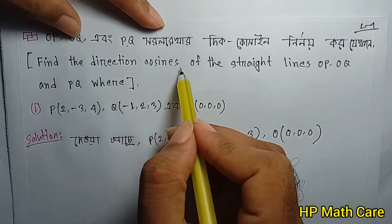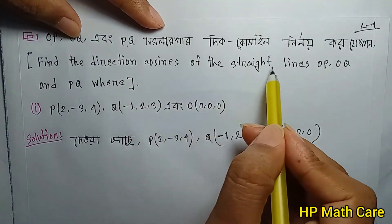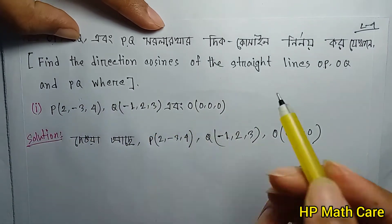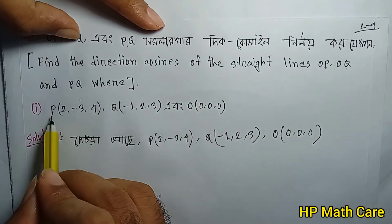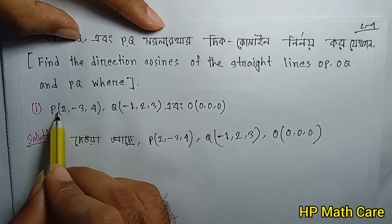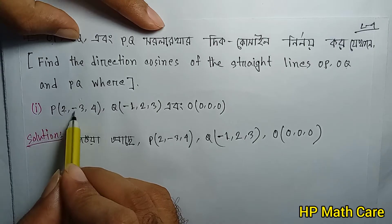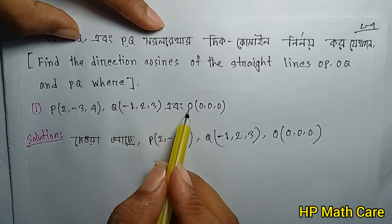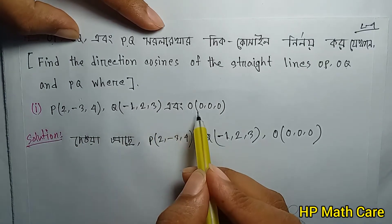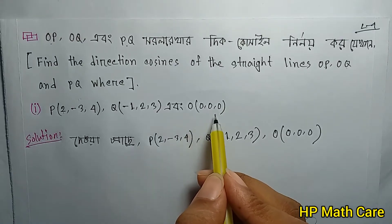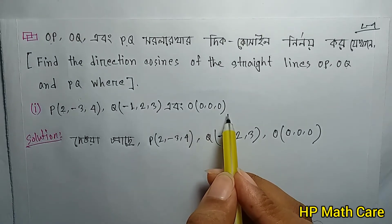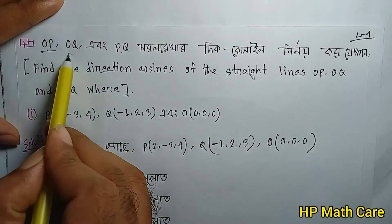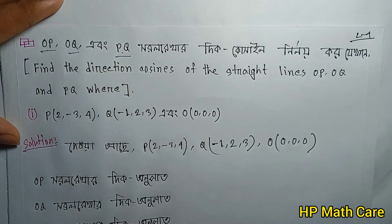Tomorrow find the direction cosine of the straight line OP, OQ, and PQ, where O is (0,0,0), P is (2,-3,4), and Q is (-1,2,3). Tell about the key: OP, OQ, PQ — direction cosines.